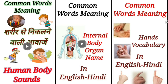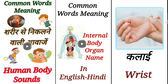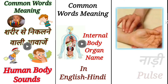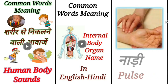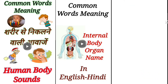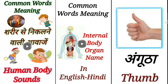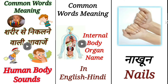Common words meaning hand vocabulary. Kalai – Wrist. Nadi – Pulse. Hatteli – Palm. Angota – Thumb. Nakun – Nails.